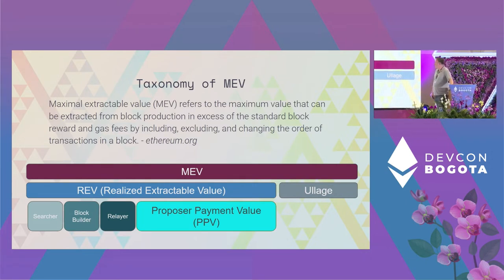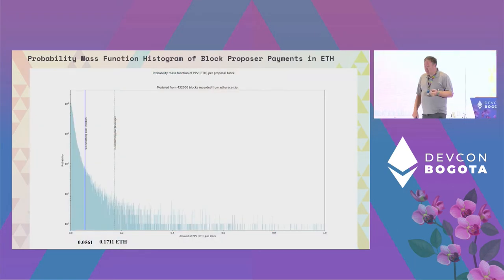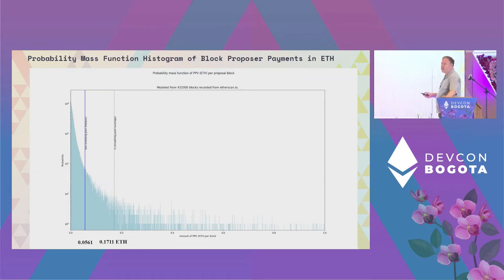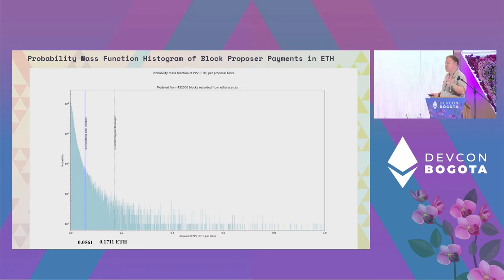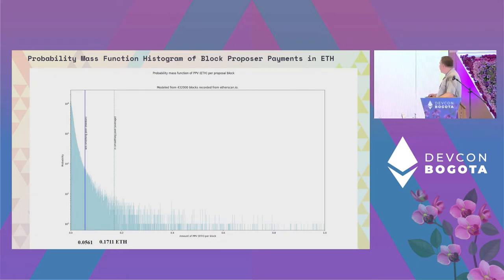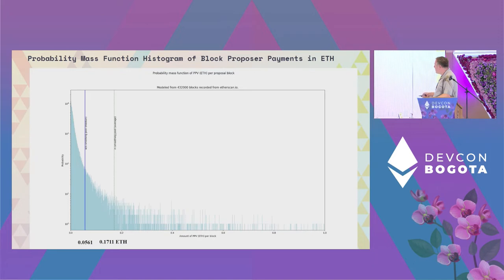I've been calling this the 'proposer payment value' — the amount paid to the validator to put transactions into the block. We performed a Monte Carlo simulation looking at it pre-merge over a period of 60 days, examining the amount of MEV extracted by miners during the May-June time period. MEV seems pretty stable in that period. It is a long-tailed distribution: 50% of blocks received less than 0.05 ETH in their block. The average is actually quite a bit higher than the median because of this long-tailed distribution.